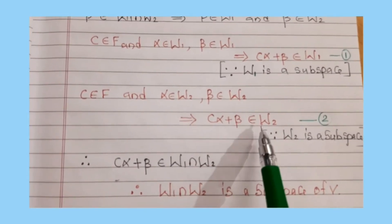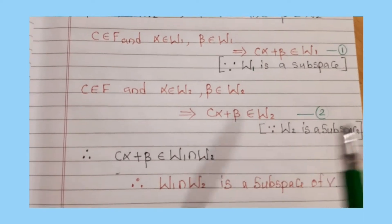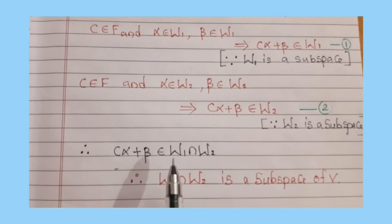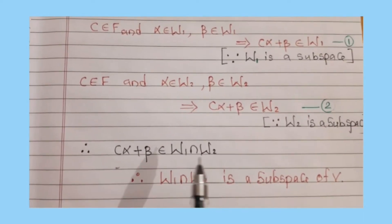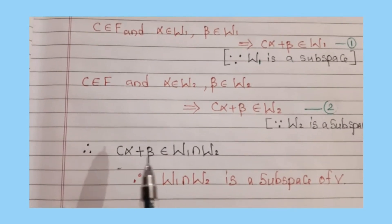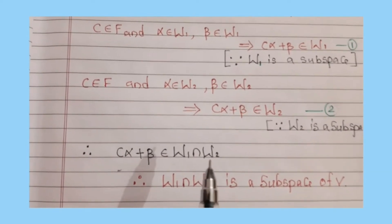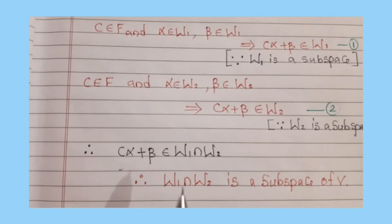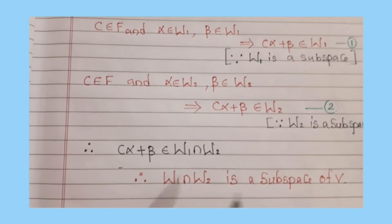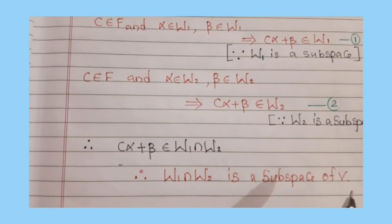From (1) and (2), c·alpha + beta belongs to W1 and c·alpha + beta belongs to W2. Therefore, c·alpha + beta belongs to W1 intersection W2, so W1 intersection W2 is a subspace of V.